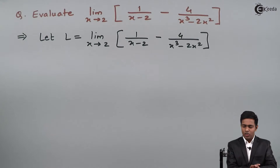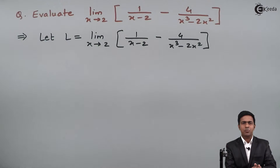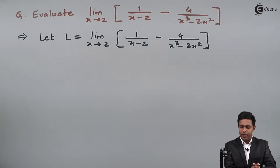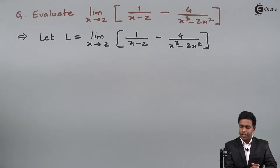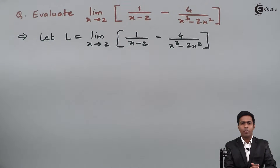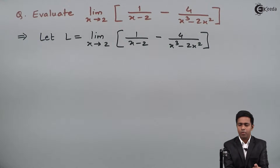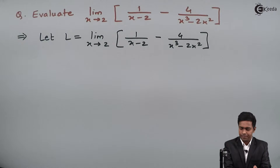Hello everyone. Here in this problem we have to evaluate the limit as x tends to 2 of 1 upon (x minus 2) minus 4 upon (x cubed minus 2x squared).